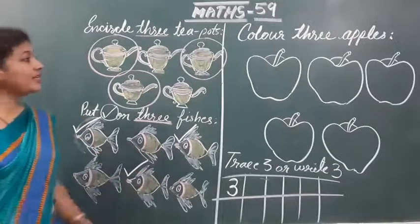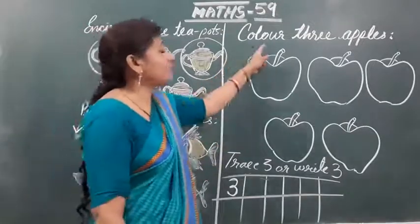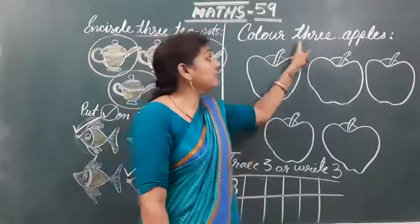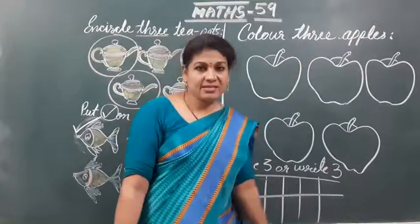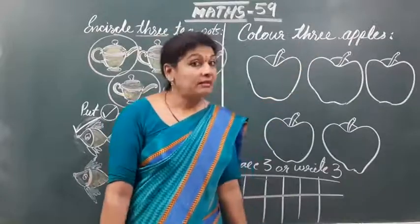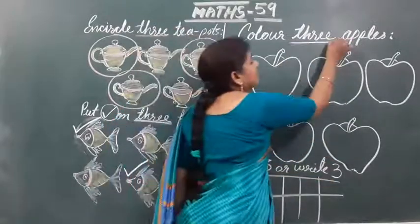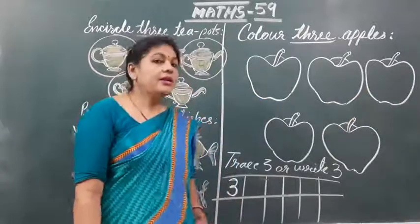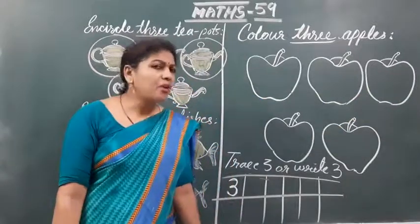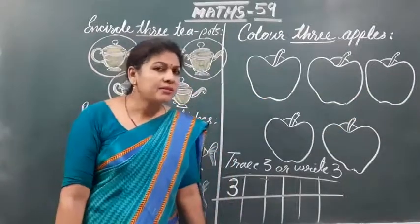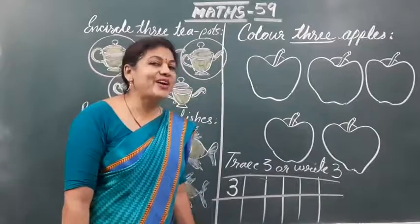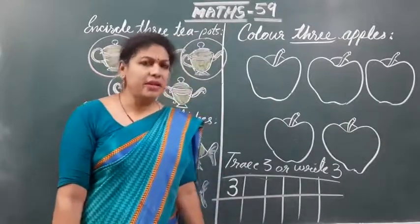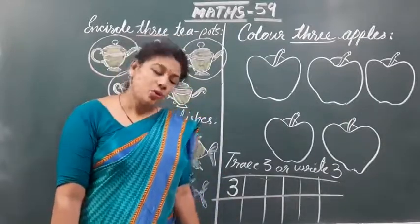Now here is given color — C-O-L-O-U-R — color 3 apples. 3 apples only. 3 apples को आपको color करना है। And what is the color of apples? Very good, you know very well — pink, green, red.